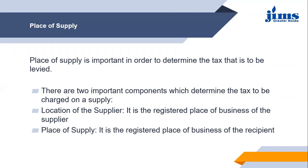The next component is place of supply. In general terms, place of supply is the registered place of business of the recipient. So if nothing else has been provided, the place of supply will be considered as the registered place of business of the person receiving the goods — the recipient's registered place of business is treated as the place of supply.